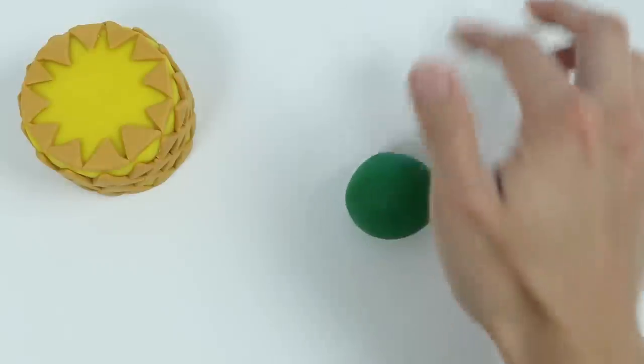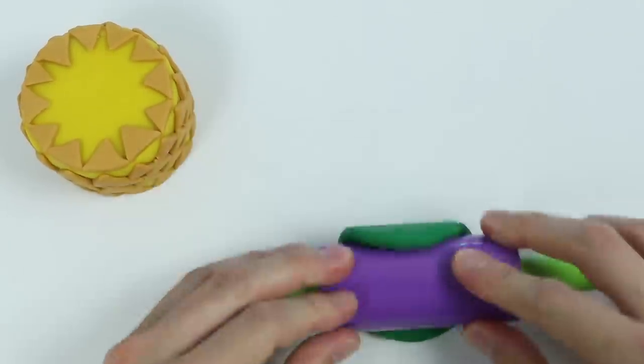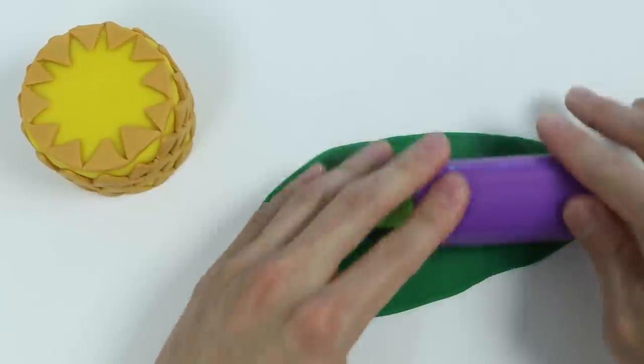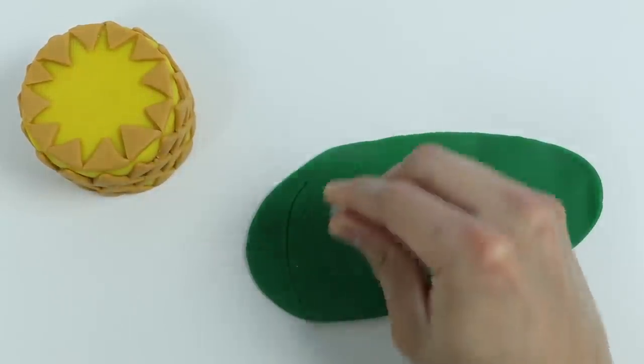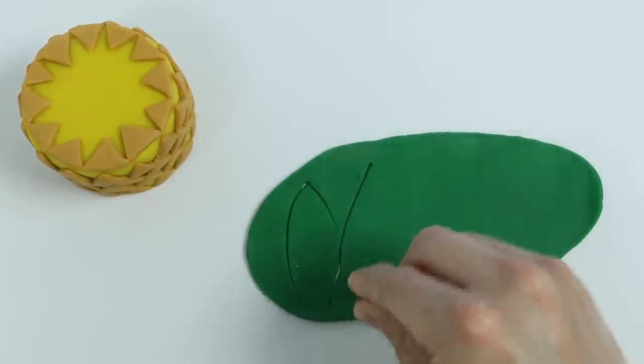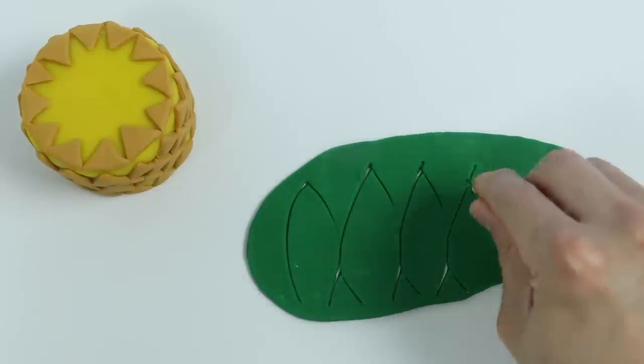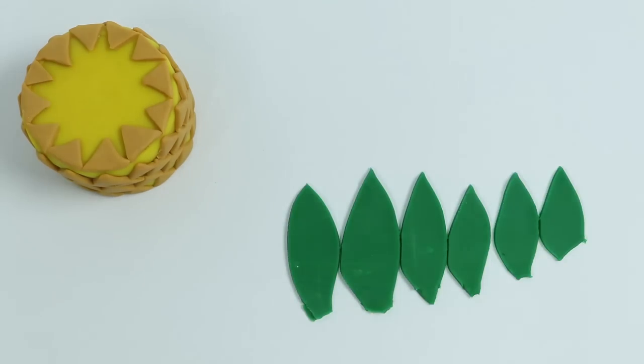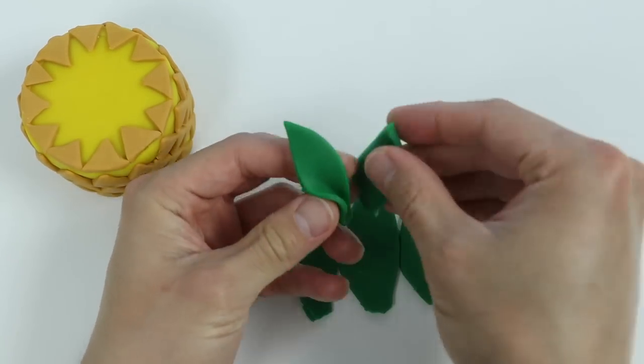We need to roll out some green Play-Doh. Okay, we're going to use this green Play-Doh to make the pineapple leaves. We'll use this tool. Okay, now let's put all these leaves together. This will only take a minute.